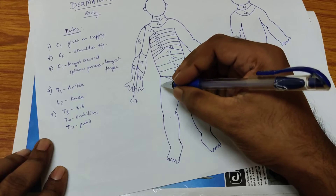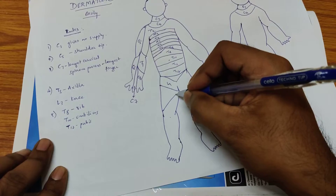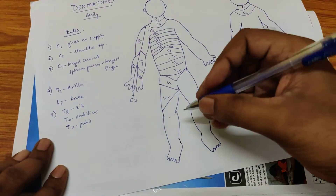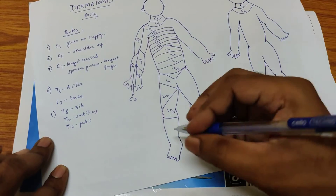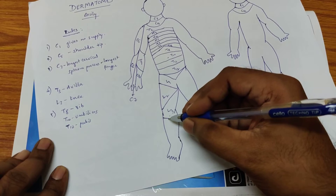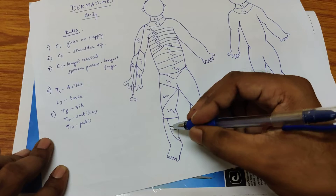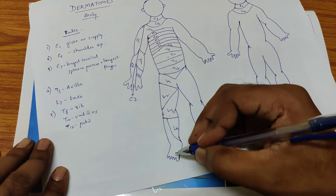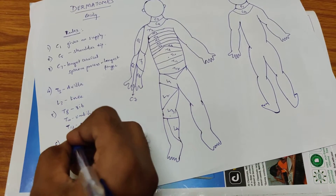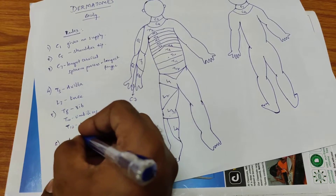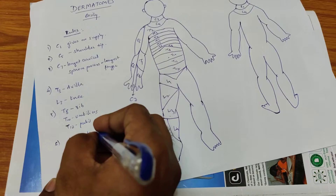The next one is L1 for the upper thigh, and L2 for the lateral aspect of the lower thigh. Since L3 supplies the knee, L3 is next, and then L4 covers the inner aspect of the leg.